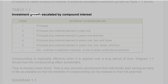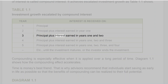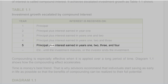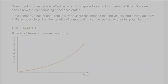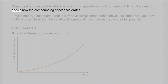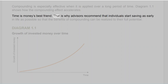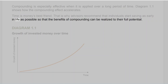Table 1.1 shows investment growth escalated by compound interest. Interest is received on: (1) principal; (2) principal plus interest earned in year 1; (3) principal plus interest earned in years 1 and 2; continuing until the investment matures or the investor ends the investment. Compounding is especially effective when applied over a long period of time, which is why advisors recommend that individuals start saving as early in life as possible so that the benefits of compounding can be realized to their full potential.